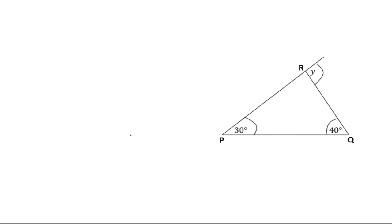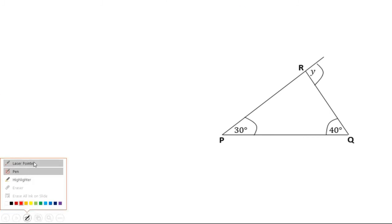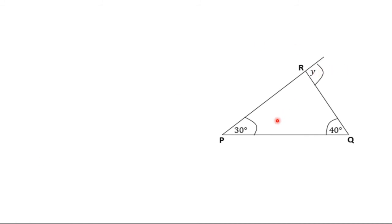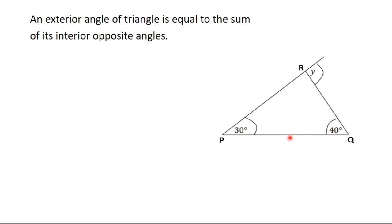In the second example, triangle PQR has an exterior angle Y, with interior opposite angles of 30 degrees and 40 degrees. An exterior angle equals the sum of its interior opposite angles, so Y = 30 + 40 = 70 degrees. Thank you for watching this video on the angle properties of triangles. We'll continue learning more properties in the next video. Bye bye.